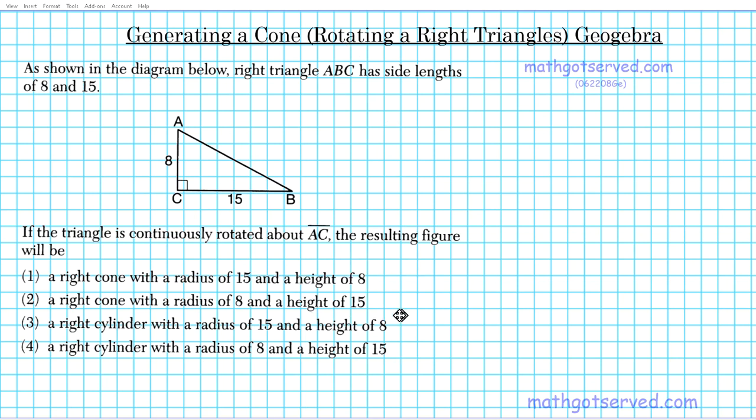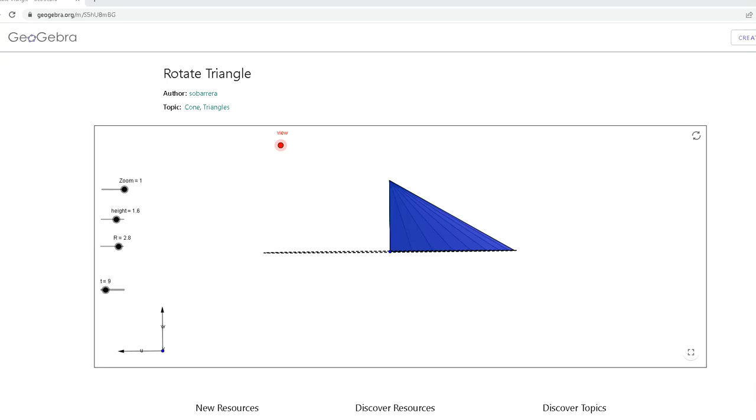So there are two solids that are presented here: a right cylinder or a right cone. If we rotate this right triangle around this axis AC, what kind of solid do you visualize resulting? Let's take a look at this nice GeoGebra visualization created by Soberrera. If you want to access it, that's the URL right there.